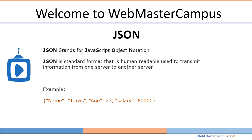JSON stands for JavaScript Object Notation. JSON is actually a standard format that is human-readable, used to transmit or transfer information from one server to another server. It's used as a replacement of XML because it's lightweight and easy to transfer. You can transfer a huge amount of data with the help of JSON — easy to handle, easy to access.